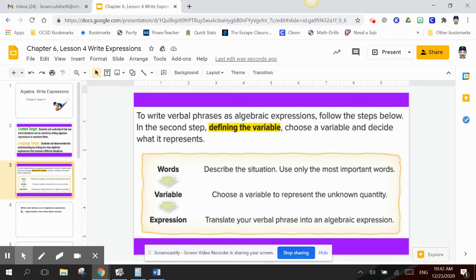So the first thing we want to do is describe the situation. What do we not know? Second thing is we're going to choose a variable to represent the unknown. I usually use W, N, A, and Z. Those letters will not get confused with your addition or subtraction or multiplication or division signs. And then we have to translate your verbal phrase into an algebraic expression.